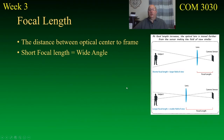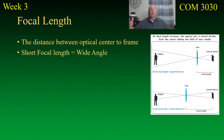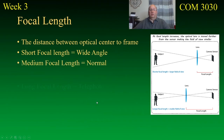A short focal length is called a wide angle lens. If we have the lens really close to that camera sensor, this angle is going to expand, and so essentially that's zooming out — you see more of the scene in front of you.